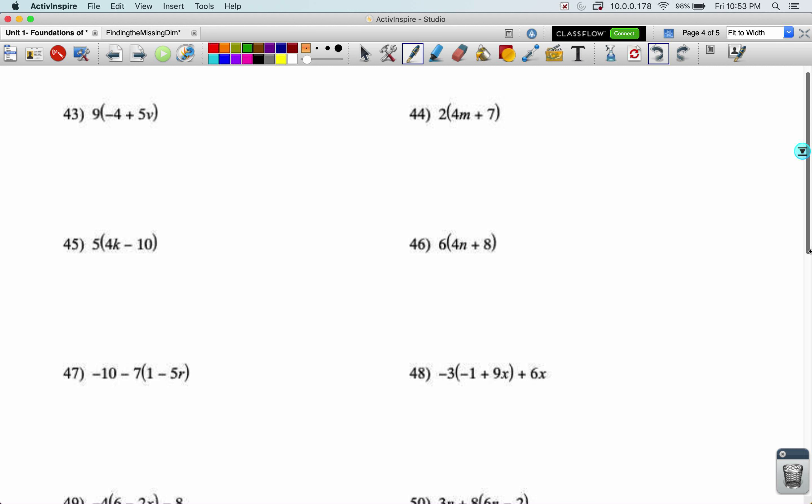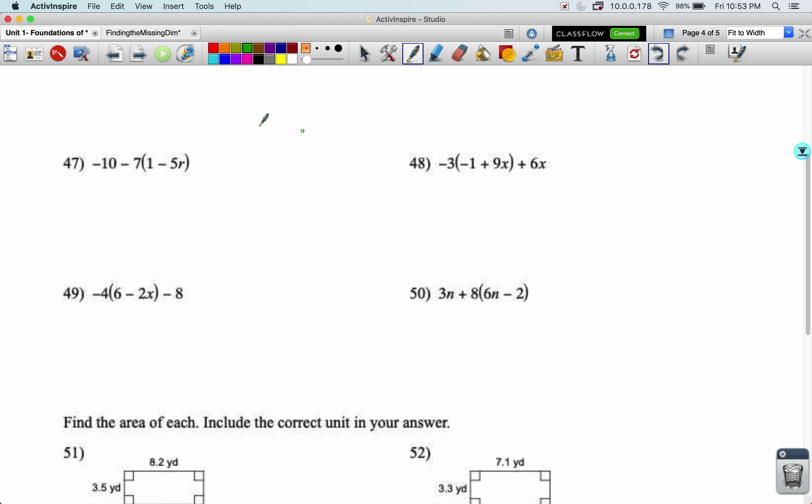Looking here, maybe 47 would be a good next one. I'm going to distribute in the negative seven. The negative is going to come with when I do this distribution. And I'm going to get negative 10 minus seven plus 35 R. Negative times a negative becomes a positive. Let's rearrange this by bringing the 35 R to the front. And then the negative 10 and the negative seven are going to become a negative 17 and go to the end because we always put the constants at the end.